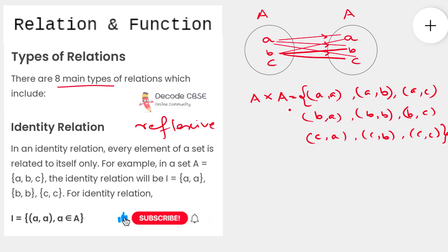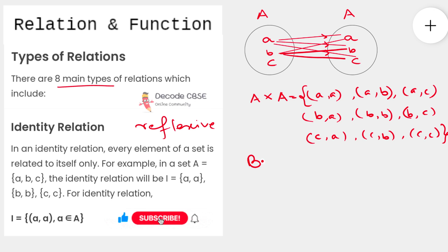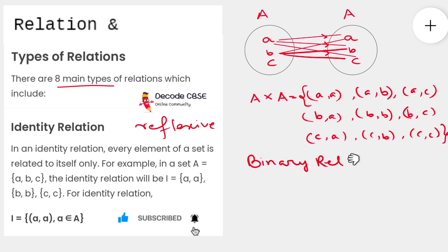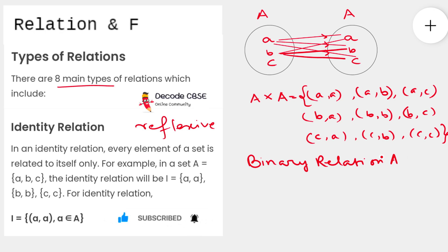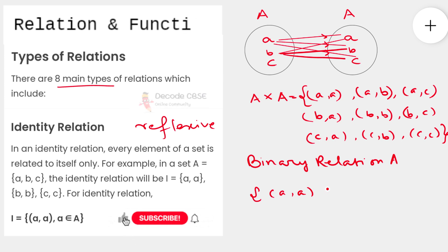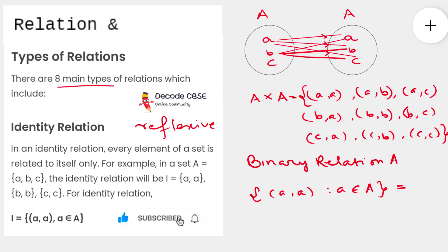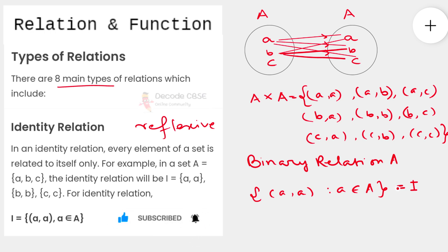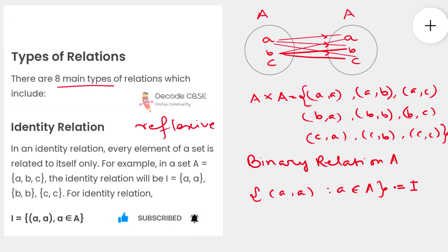Now, this binary relation — specifically the set of ordered pairs of the form (a, a) where 'a' belongs to set A — will be called the identity relation. The identity relation is often represented by capital I. Only elements that are exactly similar to each other will be included in this set.